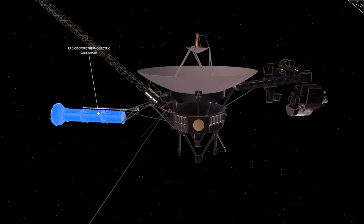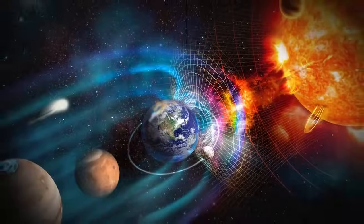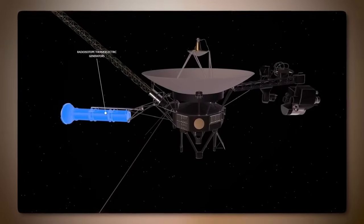This vast bubble, powered by the solar wind, extends roughly 11 billion miles from the Sun, encapsulating the Sun, all eight planets, and a significant portion of the solar system's outer regions.